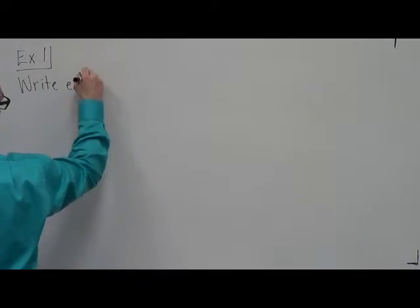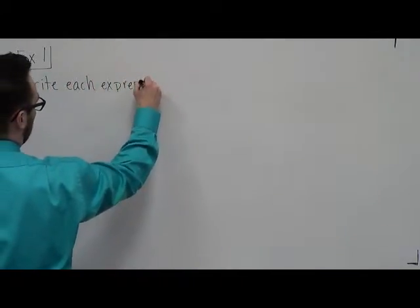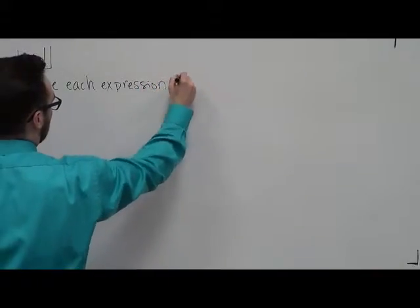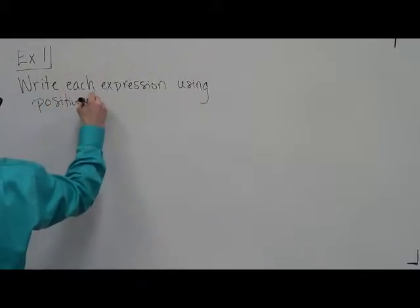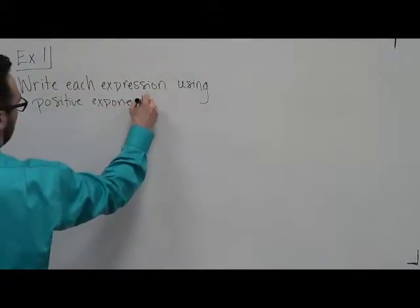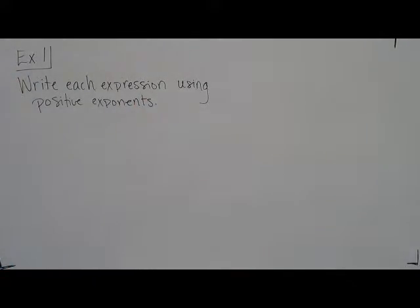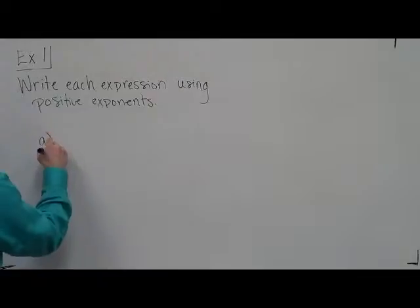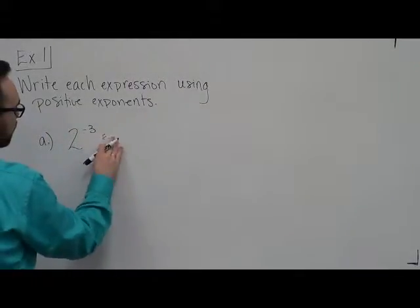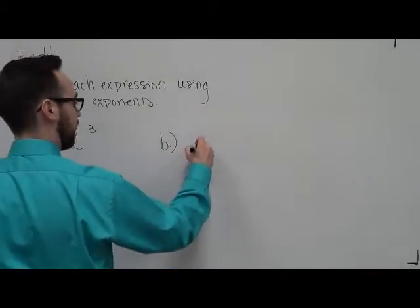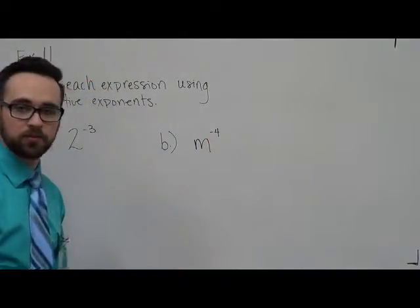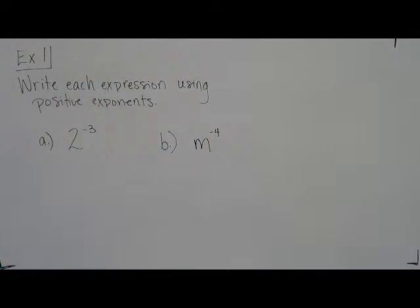All right. So, write each expression using positive exponents. For instance, if I have a is 2 to the negative 3, and then b, we will make with a variable. So we'll have m to the negative fourth. So, 2 to the negative 3 and m to the negative 4.